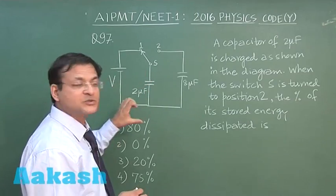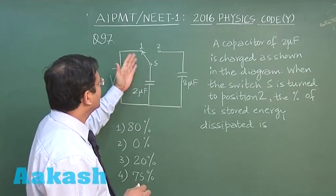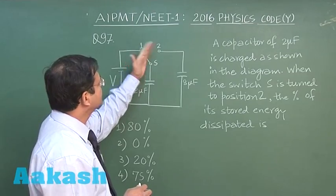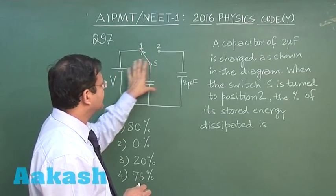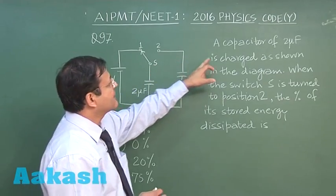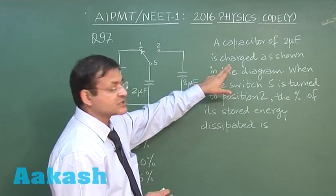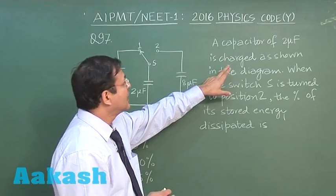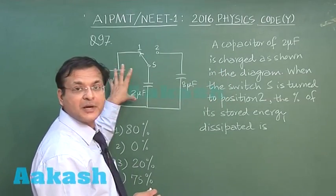This is connected to a voltage source. A switch is there, and finally this switch will be shifted to position 2, where it is connected to an 8 microfarad capacitor. So it says that a capacitor of 2 microfarad is charged as shown in the diagram. It has been charged by potential V.